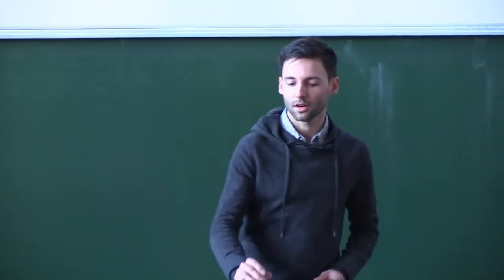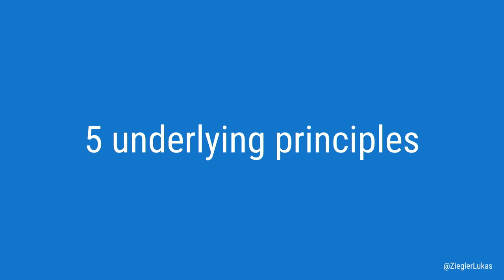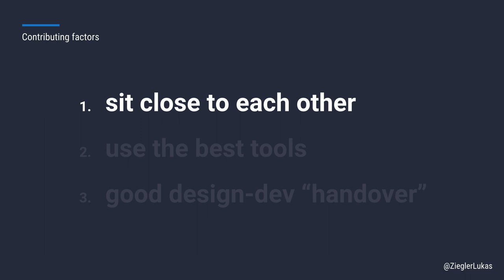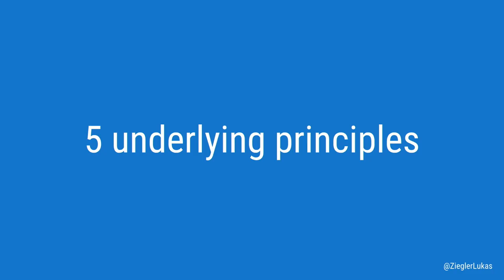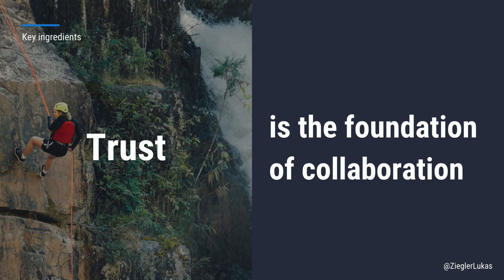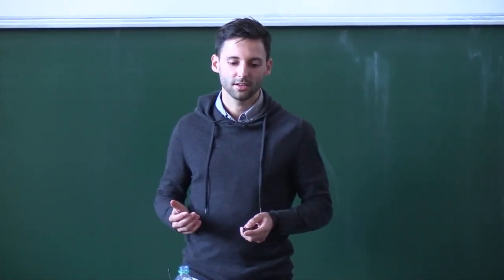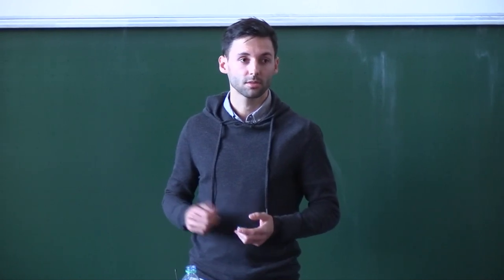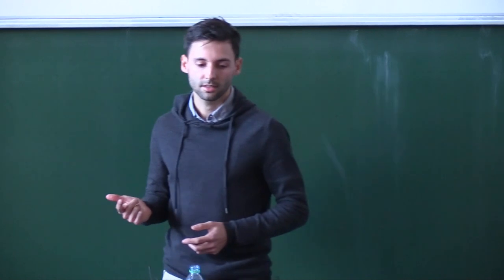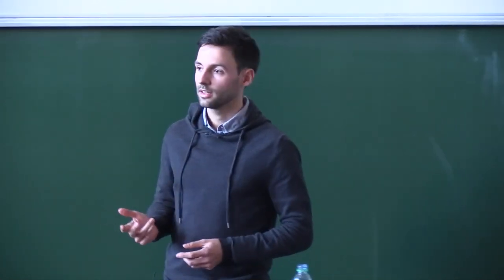What I want to focus on now are the underlying principles for good communication. These help me in my daily work and should help you reflect on why there are boundaries. If there's a gap, there's a boundary, there's a miscommunication. The five key ingredients for me start with trust. Trust is the foundation of collaboration — without trust, you don't collaborate normally. Trust is built by four pillars: competence, relatability, integrity, and communication.